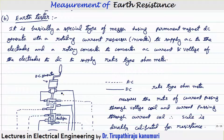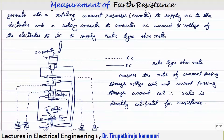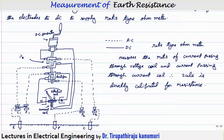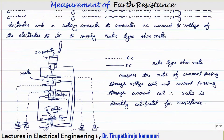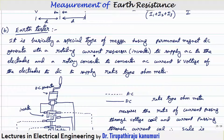The earth tester has a permanent magnet DC generator which is a handheld generator — by rotating the crankshaft we can generate the required voltage. It is designed so that if you rotate it faster than the required speed, a centrifugal switch arrangement inside ensures the rotor rotates at a constant speed, so the voltage produced at the terminals remains constant. The DC produced by this generator is then converted to AC using an inverter, because we need to apply AC to the electrodes.